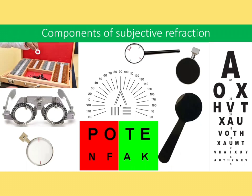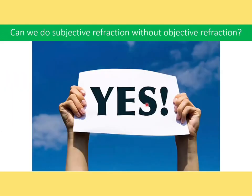Here are the components of subjective refraction: the trial frame, trial set with trial lenses, Snellen chart, Jackson cross cylinder (JCC) — used to refine astigmatism axis and power — the clock dial method also used for astigmatic axis and power refinement, the duochrome test, and the handheld occluder. I will discuss each component separately.